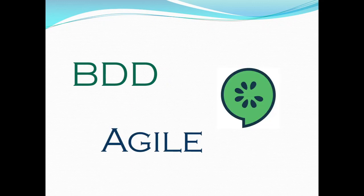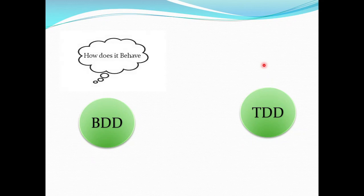First, let me explain what BDD actually is. You might be wondering whether it is a tool, a process, or a practice. BDD is basically a software development process which follows few practices to build a better end product using tools like Cucumber and JBehave. Back in 2006, Daniel Terhorst explained BDD in his first article, 'Introducing BDD.' It evolved from the thought process of how to write tests based on the behavior rather than how to test.